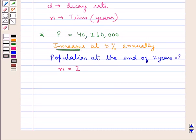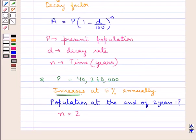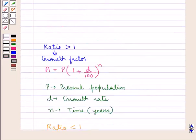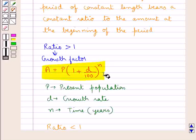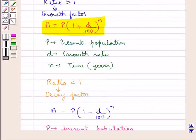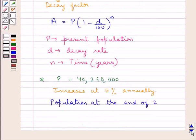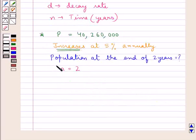Now as the population increases, the ratio between the amount at the end of each period to the amount at the beginning of each period would be greater than 1. So as the ratio would be greater than 1, it would be a growth factor, and in that case this law would be obeyed: A is equal to P into 1 plus D upon 100, whole to the power of N.